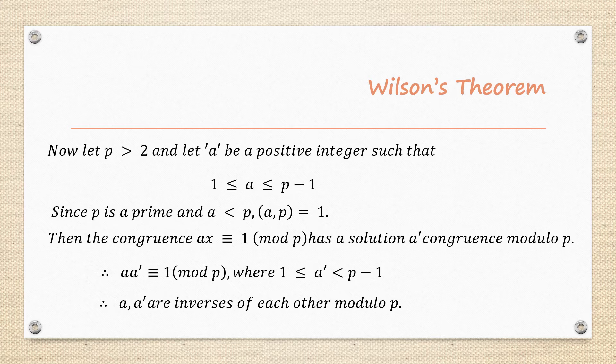Since P is prime and A is less than P, the GCD of A and P equals 1. For example, if P = 5 and A = 4, the GCD of 4 and 5 is 1. So whenever A is less than P and P is prime, GCD(A, P) = 1.